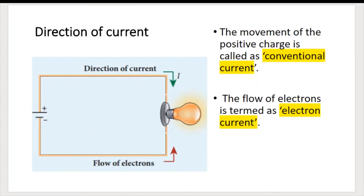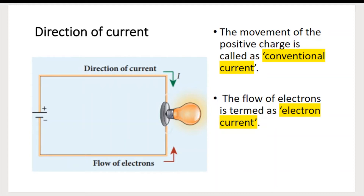In the circuit diagram, the direction of current is marked from the positive terminal of the battery to the negative terminal — this is known as conventional current, which represents the movement of positive charges. Before the discovery of electrons, scientists defined current this way. Actually, electrons flow from the negative terminal to the positive terminal, and this is termed as electron current.